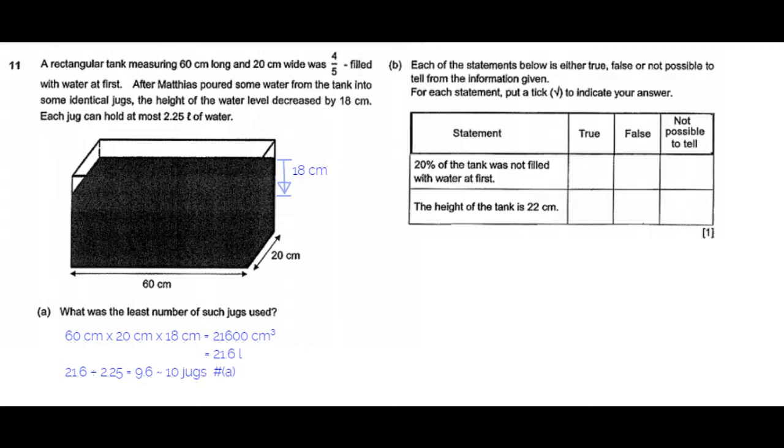Part B: each of the statements below is either true, false, or not possible to tell from the information given. For each statement, put a tick to indicate your answer.